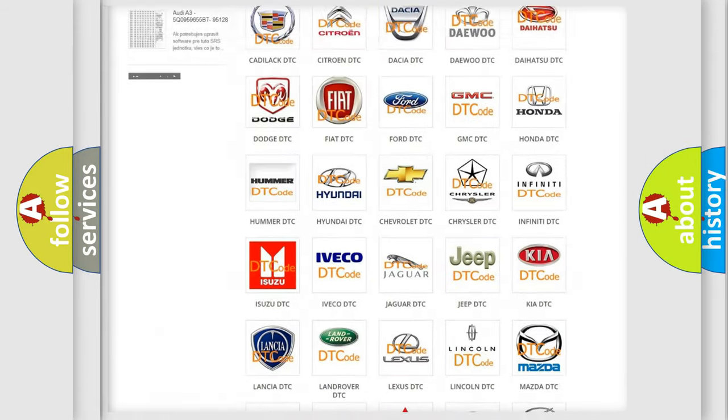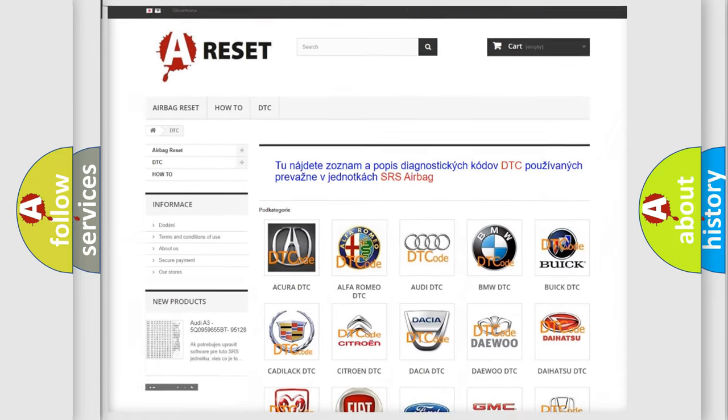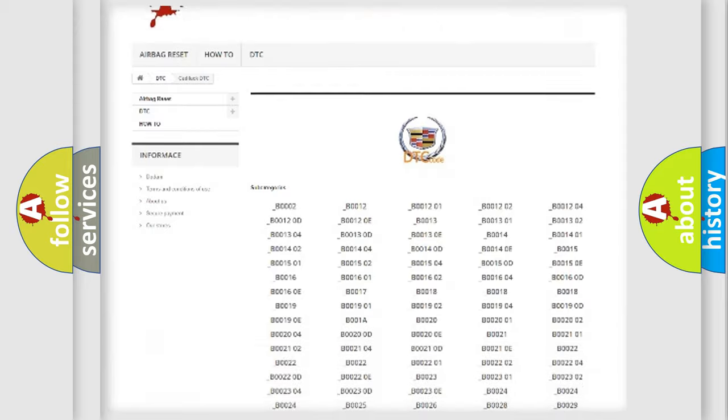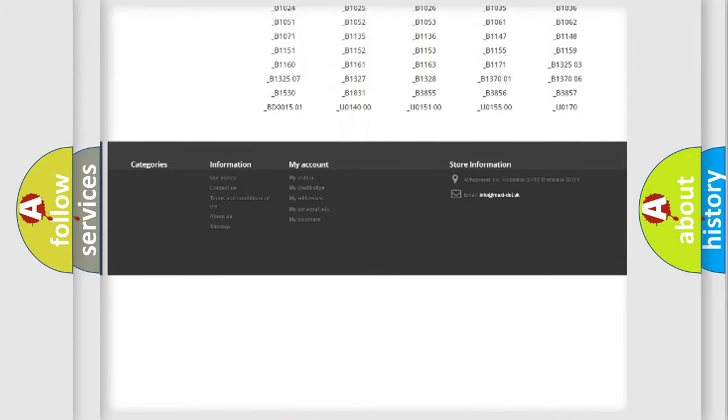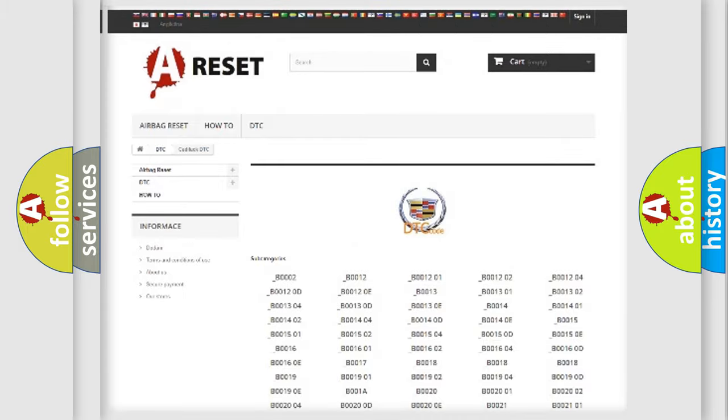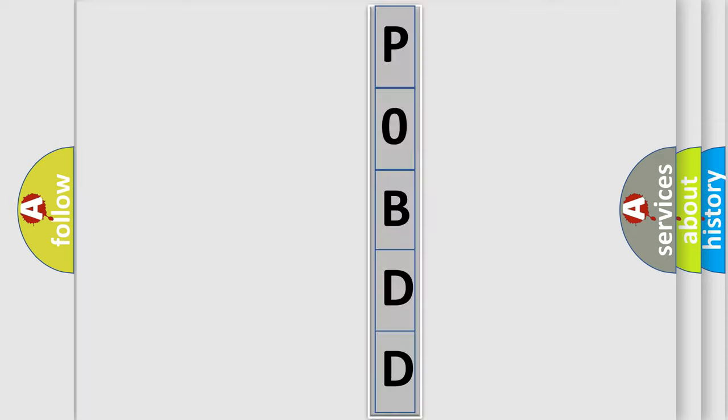Our website airbagreset.sk produces useful videos for you. You do not have to go through the OBD2 protocol anymore to know how to troubleshoot any car breakdown. You will find all the diagnostic codes that can be diagnosed in Cadillac vehicles, and also many other useful things. The following demonstration will help you look into the world of software for car control units.